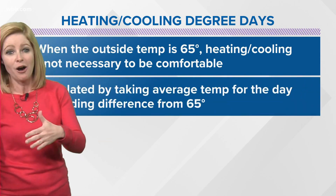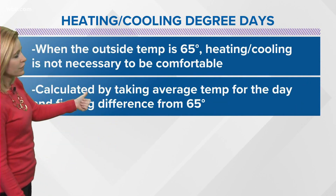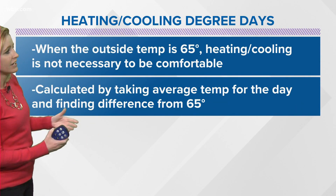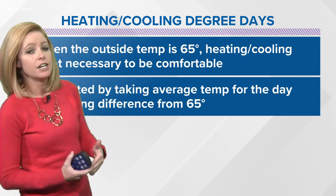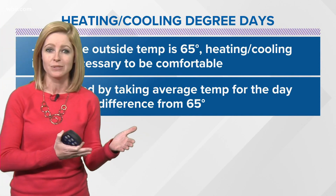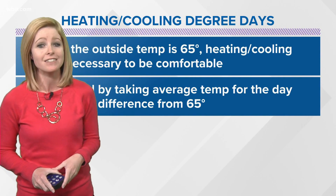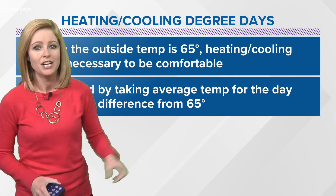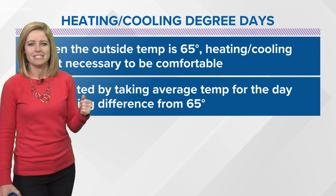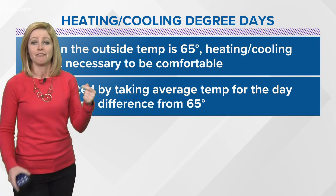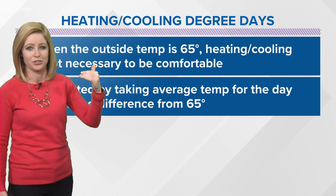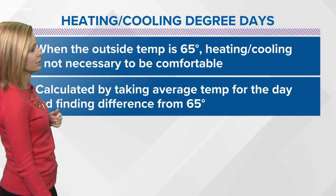Let's walk you through how and why these are calculated. They are calculated by taking the average temperature for the day and finding the difference from 65 degrees. For example, if your morning low was 60 and your afternoon high was 80, the average temperature for the day would be 70, which is above 65 degrees by five degrees. That means we would have had five cooling degree days for that date — you would have had to use your AC to cool your indoor space down.